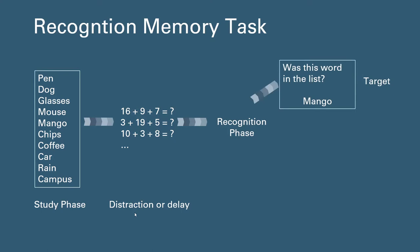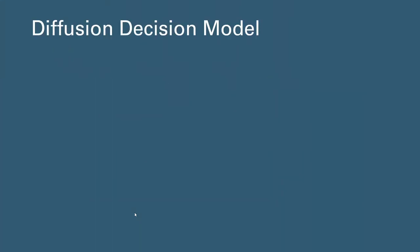The word from the original list will be called target and the new words will be called lures. The current study is using the diffusion decision model which has been successful at predicting performance in recognition memory tasks.